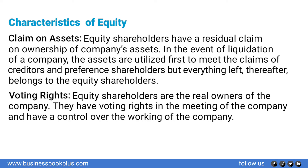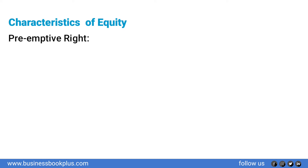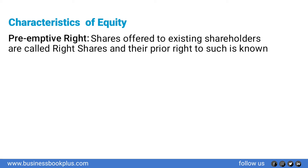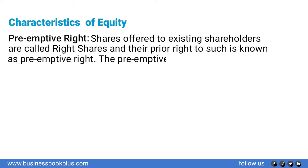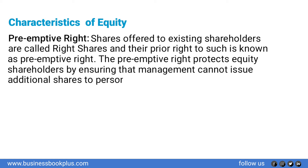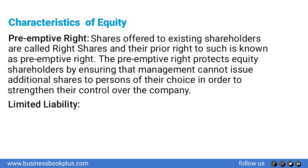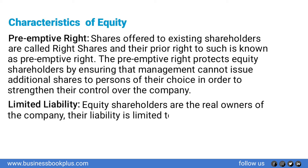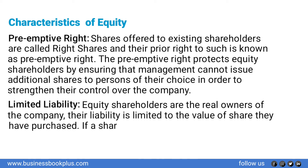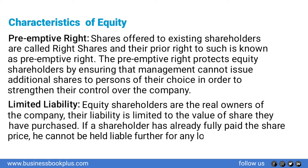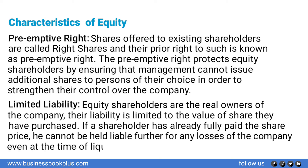Preemptive right — shares offered to existing shareholders are called right shares, and their prior right to such is known as the preemptive right, which prevents management from issuing additional shares to persons of their choice to strengthen their control. Limited liability — equity shareholders' liability is limited to the value of shares they have purchased; a shareholder who has fully paid the share price cannot be held liable further for any losses, even at the time of liquidation.